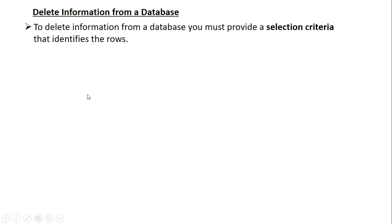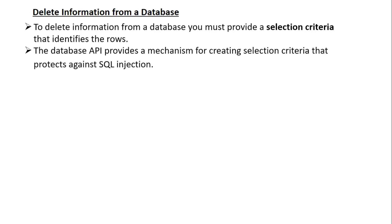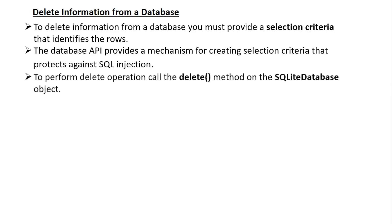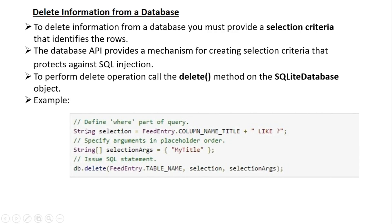Now we can learn about how to delete information from a database. To delete information, you must provide selection criteria that identify the rows. The database API provides a mechanism for creating selection criteria that protects against SQL injection. To perform a delete operation, call the delete method on the SQLiteDatabase object. Here is a simple example: we specify the selection criteria and selection arguments, then call the delete method, passing the table name, selection condition, and selection arguments.